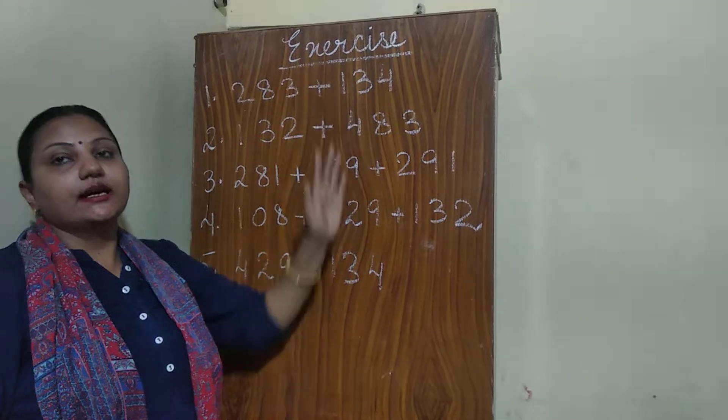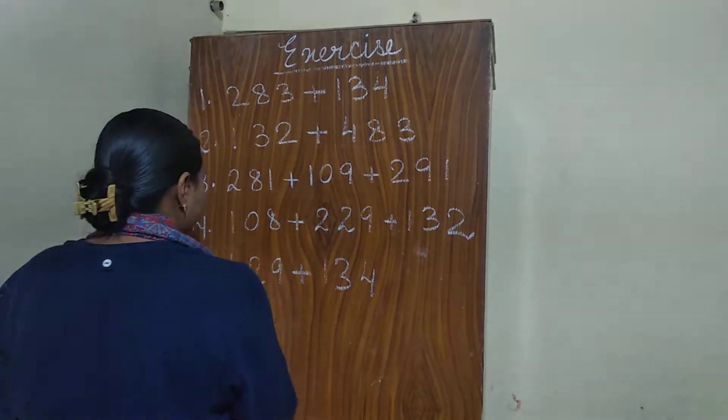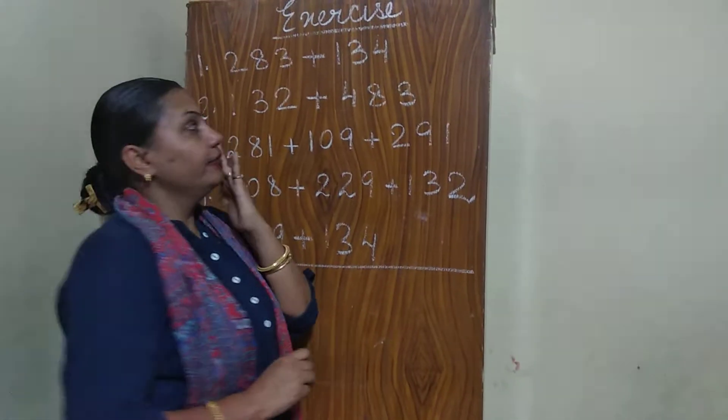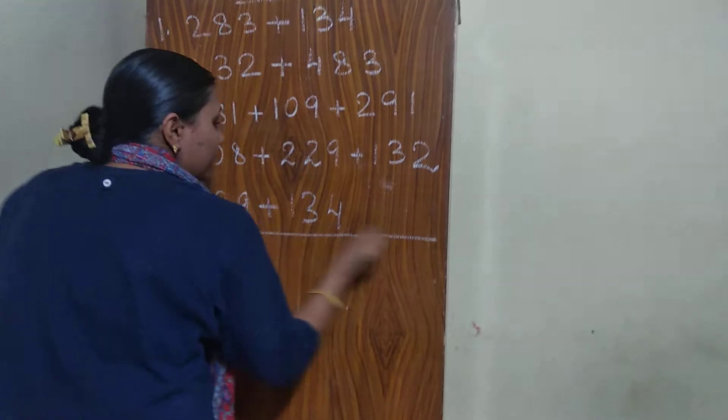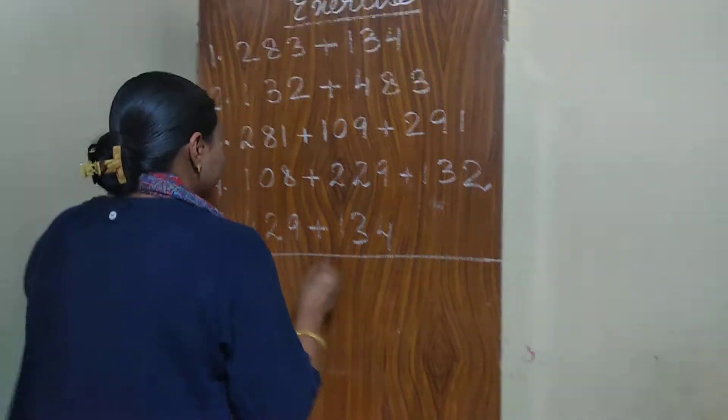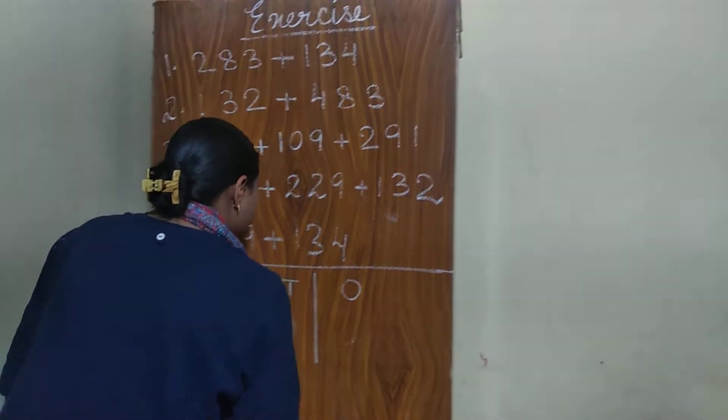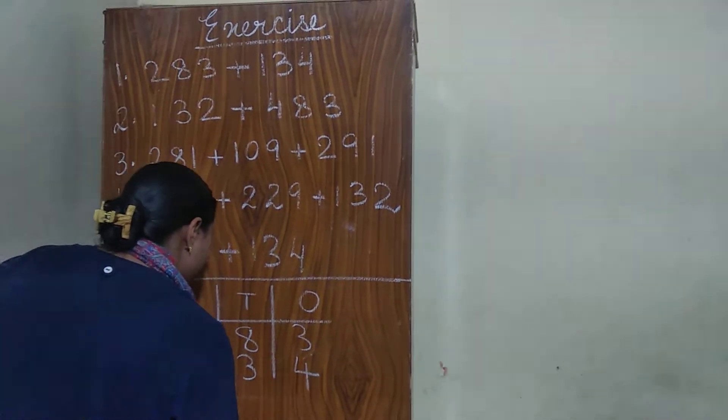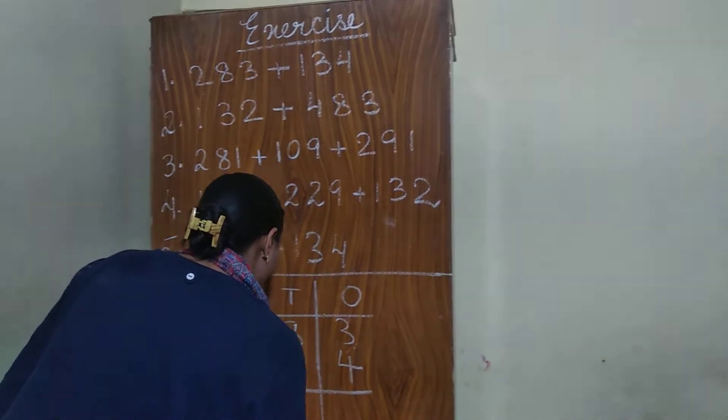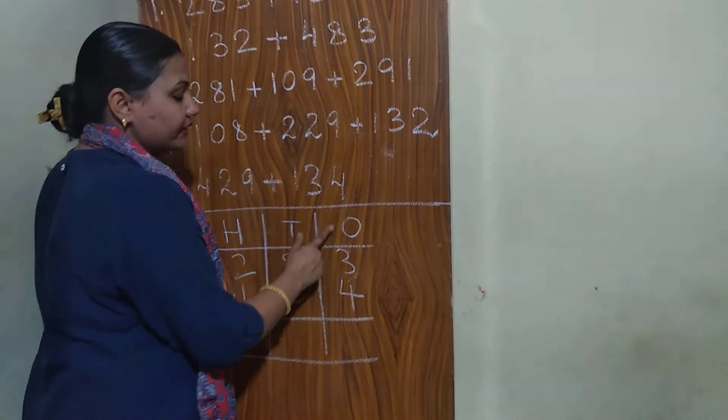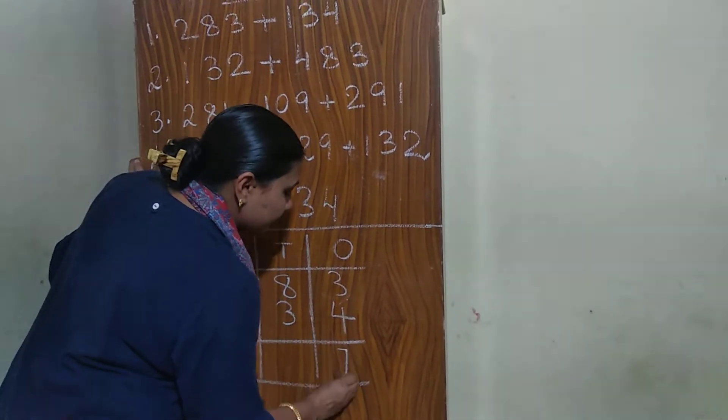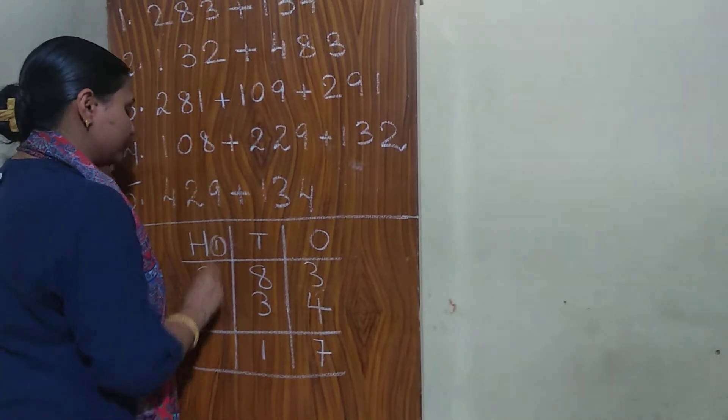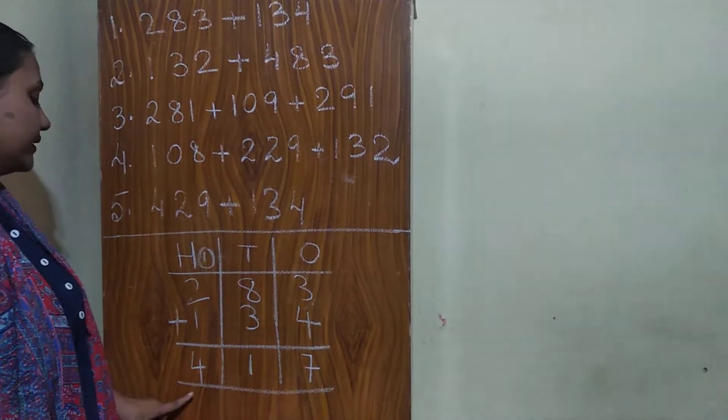I am solving this first question that what is the process of doing the addition. The first is we have to make the column. First of all we cannot write the direct answer. We will arrange it in column and then we will write. Now as I told you that first we will start from 1's place. 3 plus 4 that is 7. Now 10's place 8 plus 3 that is 11 that carry will be 1. And 2 plus 1 is 3. 3 plus 1 is 4. So answer is 417.